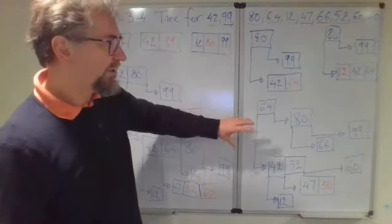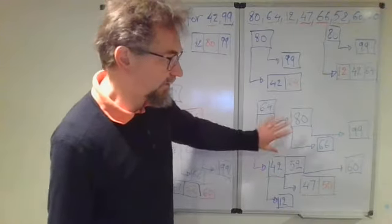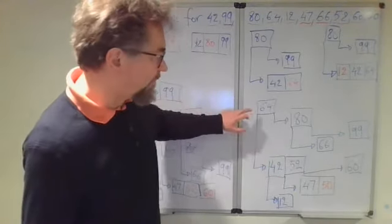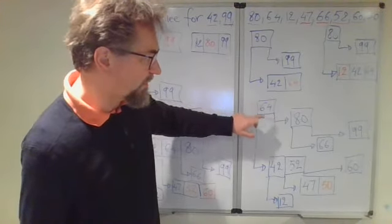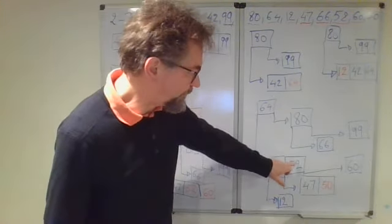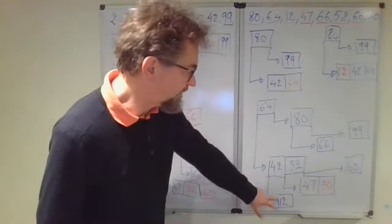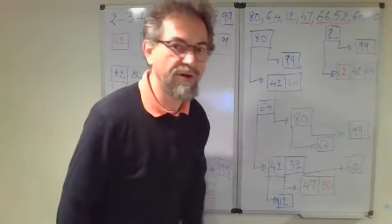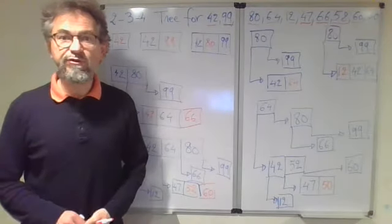But the level was introduced at the left and at the right. So here we have the root at level zero. Then the first level has 80 and 42 to 52. And then there is a third level that has these numbers, which are the leaves. So this is a balanced search tree.